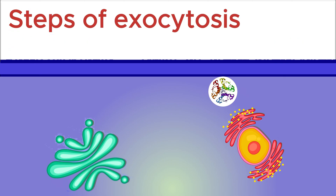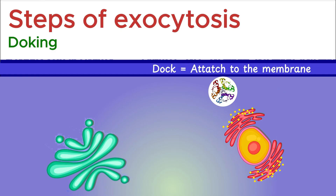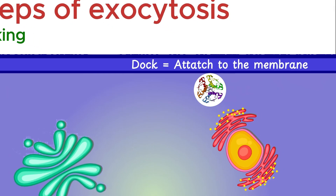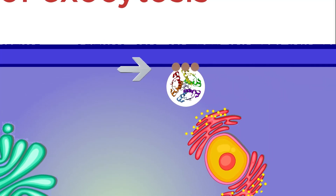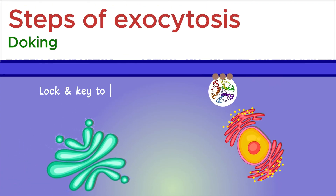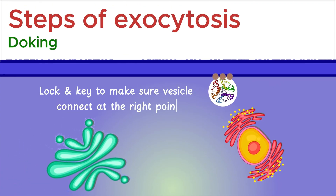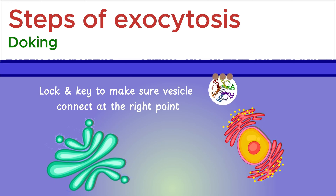Docking: now the vesicle has reached the cell membrane. Before it can release its contents, it needs to dock — this means it attaches to the membrane, like a ship docking at a port. Special proteins on the vesicle and the membrane help them stick together. These proteins work like locks and keys to make sure the vesicle connects at the right spot. Once the vesicle is docked, it gets ready to fuse with the membrane and push the material out.